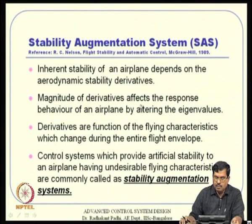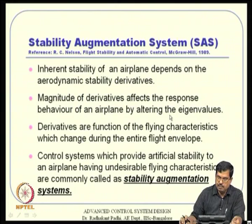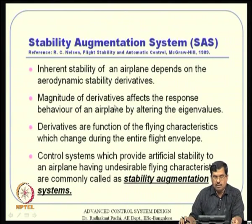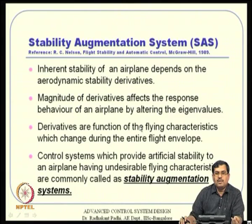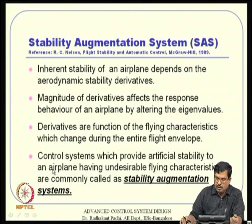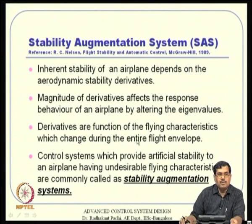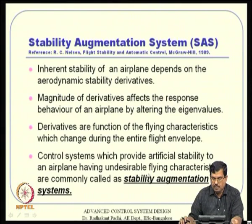Aerodynamic stability derivatives such as C_m_alpha and C_n_delta affect response behavior by altering eigenvalues. These derivatives are not constant; they change as functions of angle of attack, Mach number, and dynamic pressure (which is a function of altitude). Control systems that provide artificial stability to an airplane having undesirable flying characteristics are commonly called stability augmentation systems. In such systems, the plant by itself is not stable but the closed-loop design makes it stable artificially.